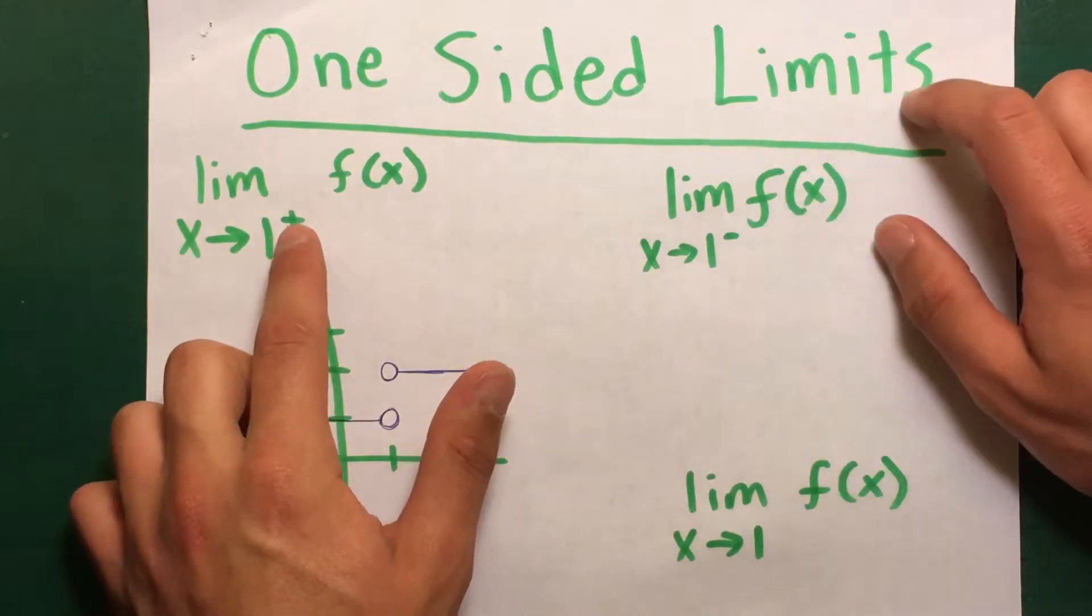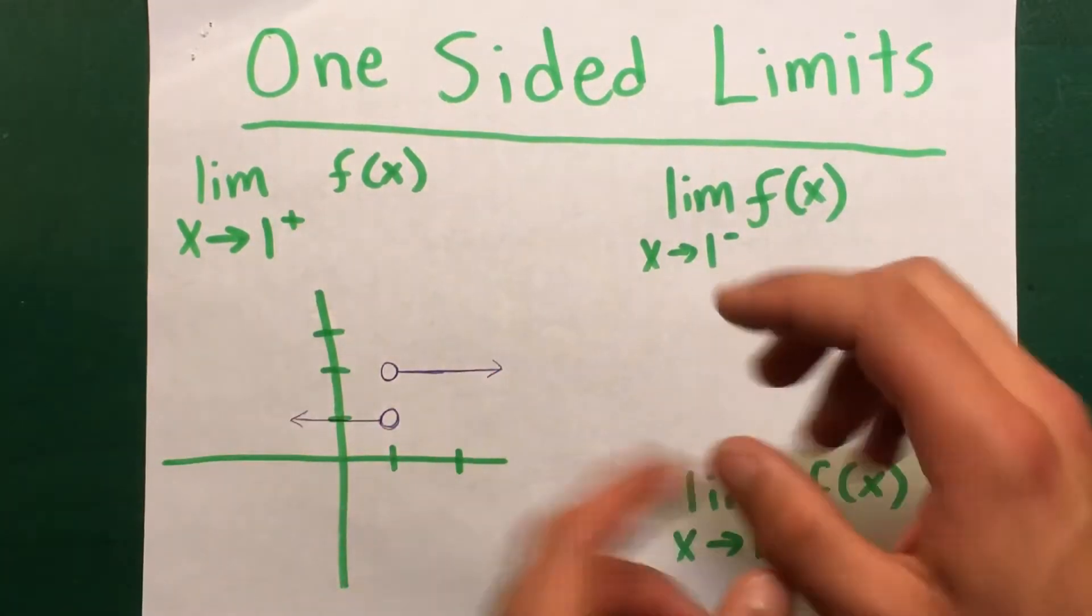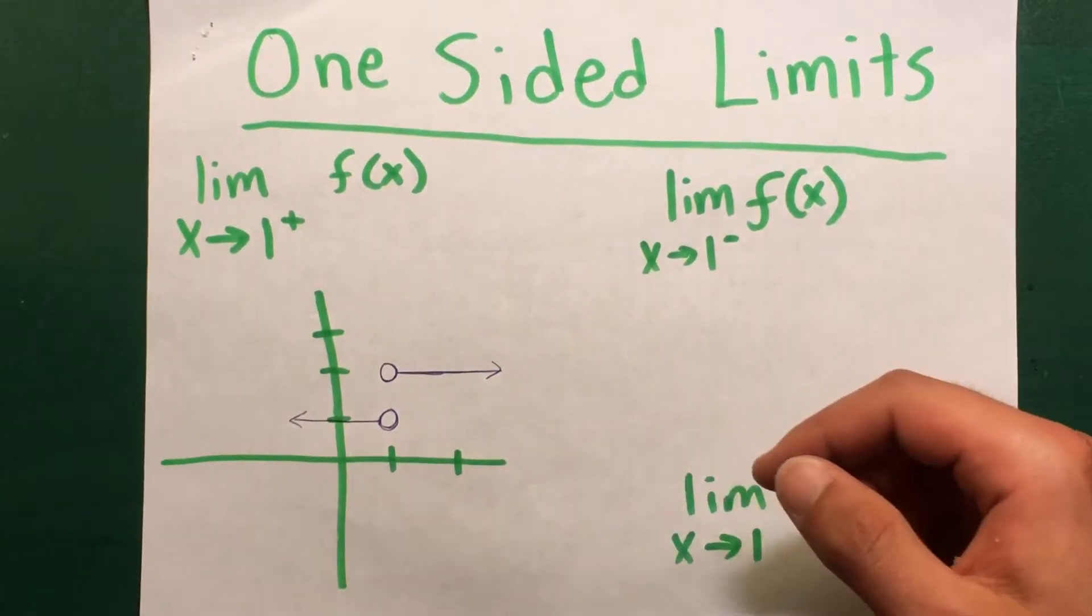So to begin with, when you see this positive sign, this plus sign right there, it means coming from the right, and this minus sign means coming from the left.